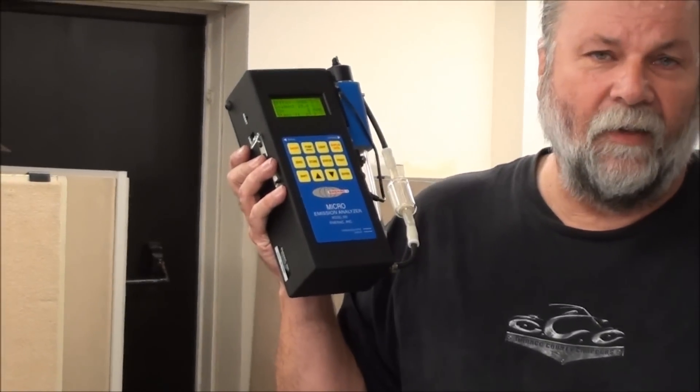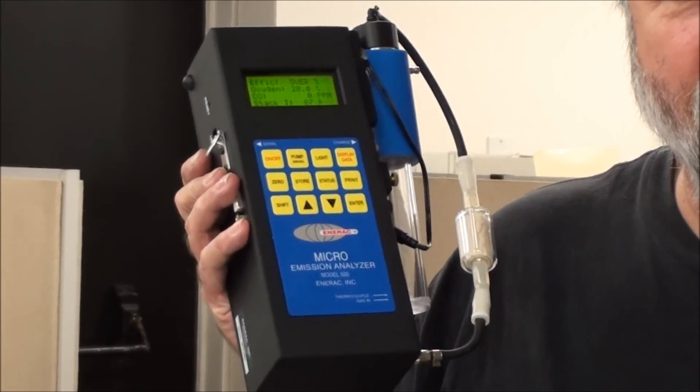Here we have the Anirac Model 500. This unit is designed for quick testing of smokestacks, any emission sources, whether it's an engine, stationary engines, compressor stations, boiler rooms, any large emission sources you can use this on.